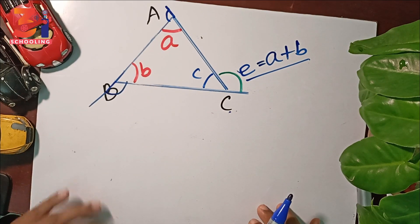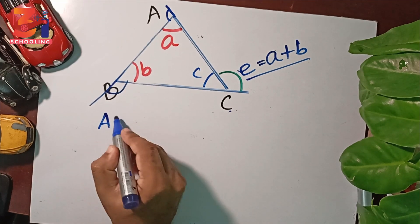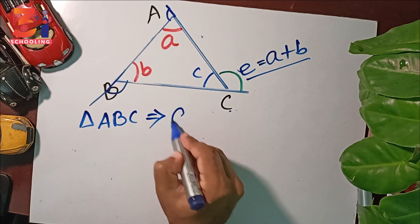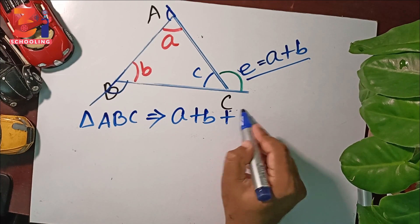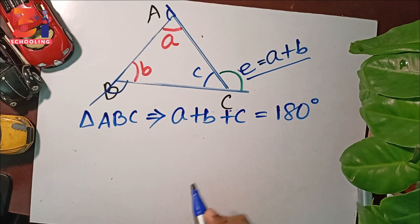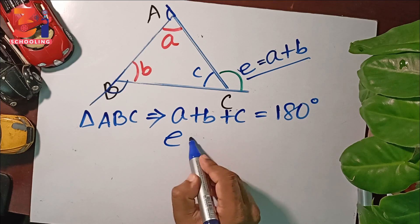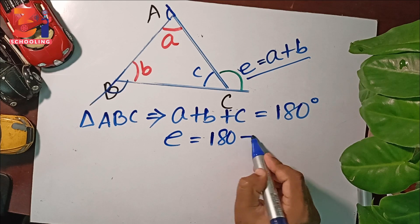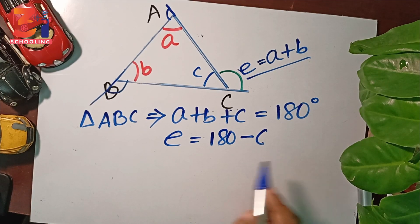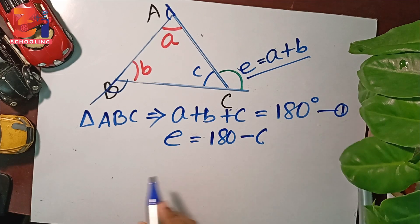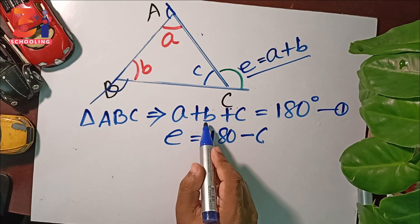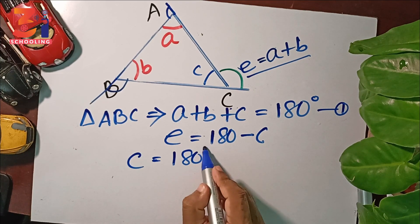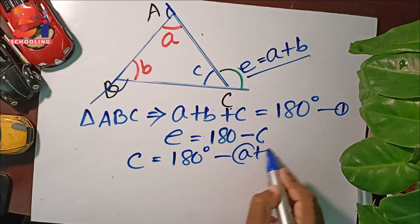Let's see here. What is A, B, C? The angle ACB plus C is equal to 180 degrees. This is how we can write it: the exterior angle equals 180 degrees minus C.